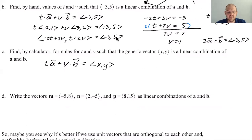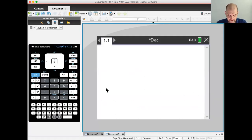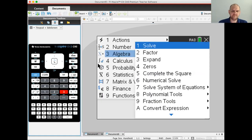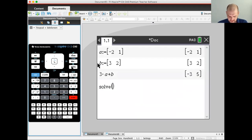So let's see if we can do this a little more generally. So find by calculator, thankfully, formulas for T and V. So they're going to be functions of X and Y, such that the generic vector XY is a linear combination of A and V. So we're saying that T times A plus V times B should equal XY. And then we want to figure out what T is in terms of X and Y and what V is in terms of X and Y. So to do that, I'm going to switch over to the calculator. So I'm just on a new document. So first I'm going to store A and B. So A colon equals negative 2, 1. B colon equals 3, 2.